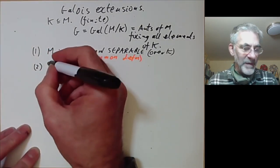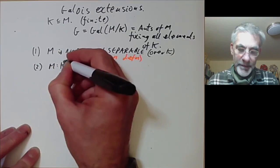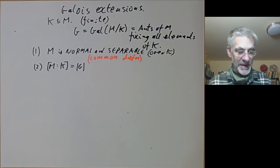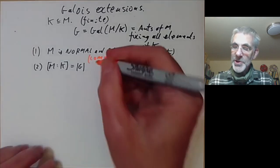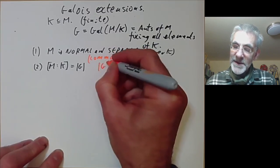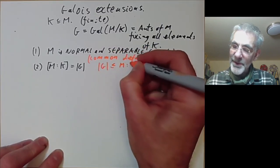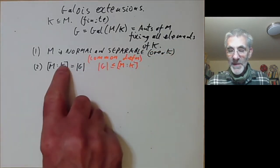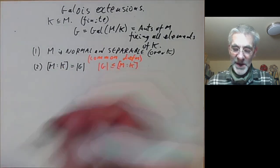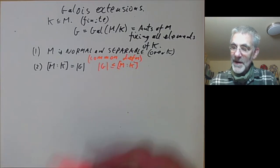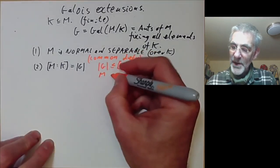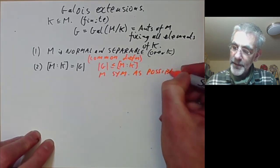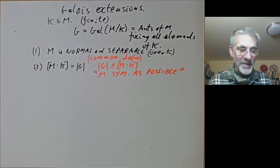The second equivalent condition says that the degree of the field extension equals the order of the Galois group G. We'll show that for any field extension the order of G is always less than or equal to [M:K], so this says the symmetry group of M is as large as possible — Galois extensions are the symmetric ones.